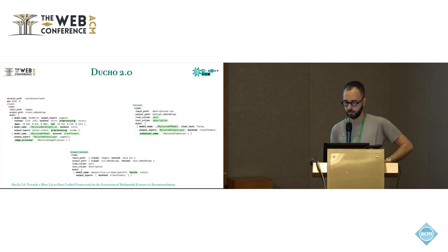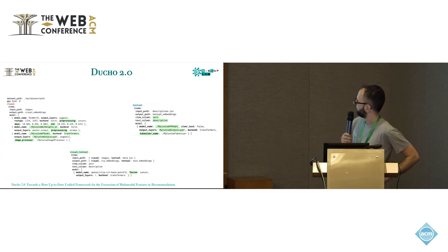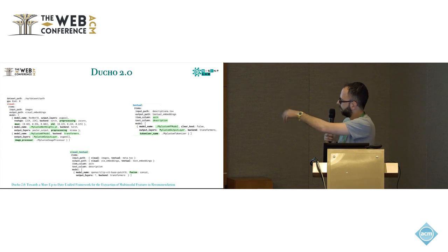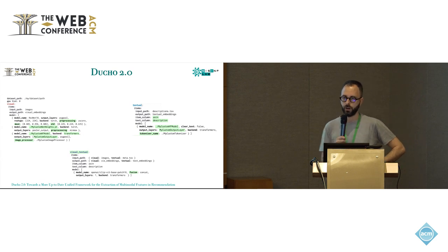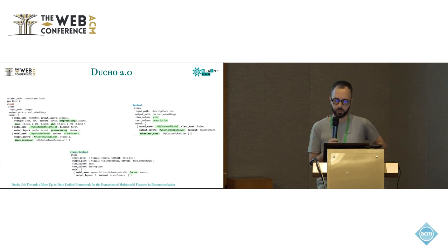Here is a sample configuration file for Duccio 2.0. Highlighted in light green are the differences between Duccio 1.0 and Duccio 2.0. It's possible to set up the input path and models across different modalities — visual, textual, and combined visual-textual using CLIP, for example. You can also set up a custom model trained on your own machine by specifying the architecture and the filename of your weights, or use a model from Hugging Face Transformers. Then you can run your extraction.